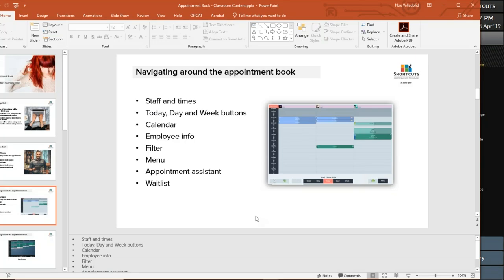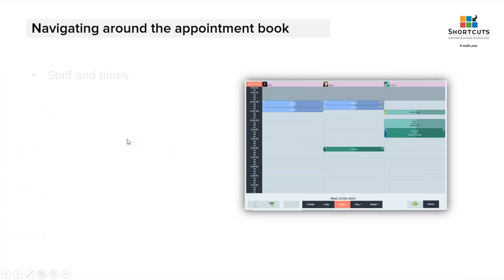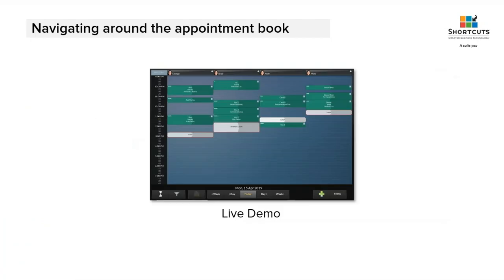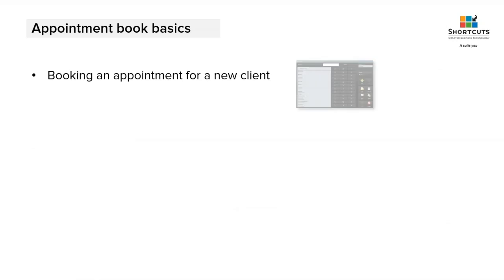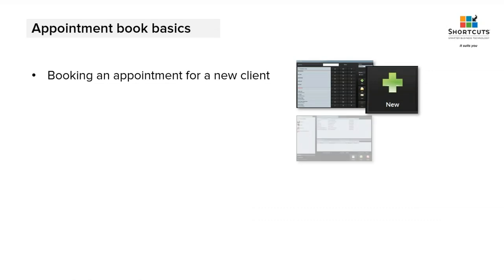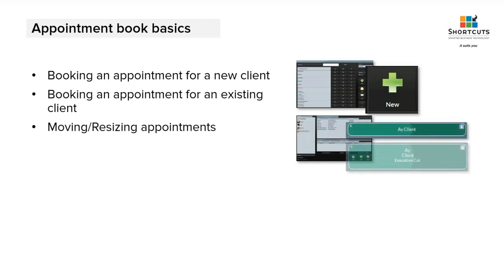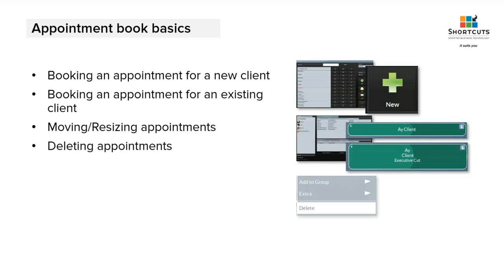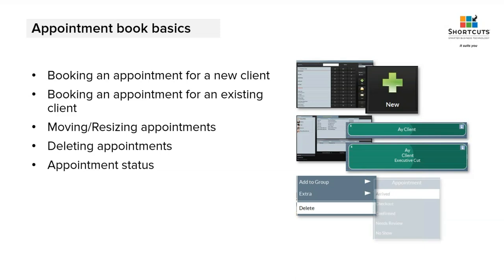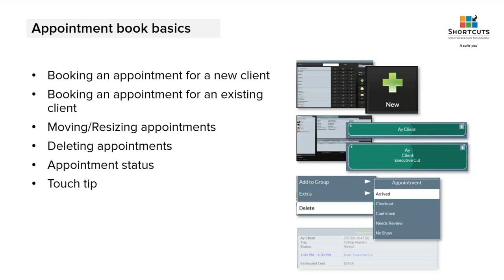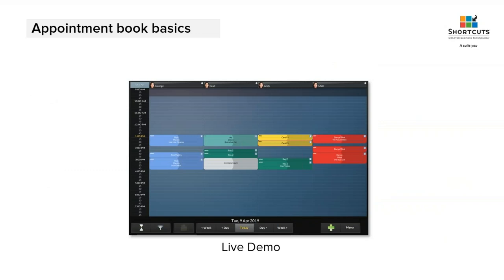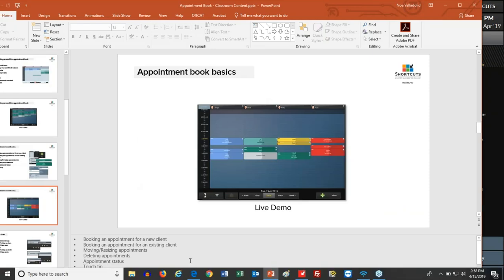Let's go back to our presentation. We just went through the live demo. Now that you know where things are placed on the appointment book, you need to learn how to make an appointment — whether for a new or existing customer — how to move and resize appointments, how to remove appointments, and appointment status. Do you have a salon or spa with a number of chairs that gets busy? You want to track whether customers have arrived, confirmed, or are no-shows. How does the touch tip work and what information is provided for your staff?